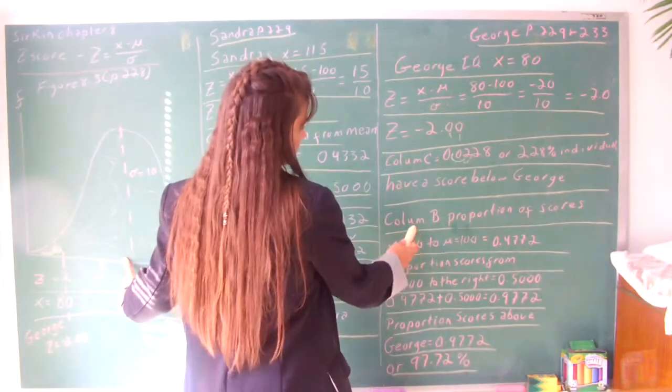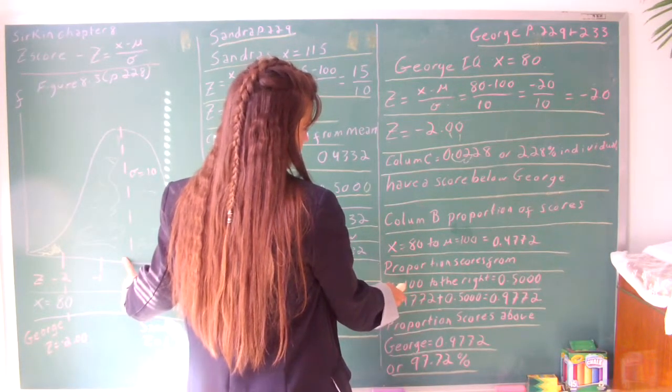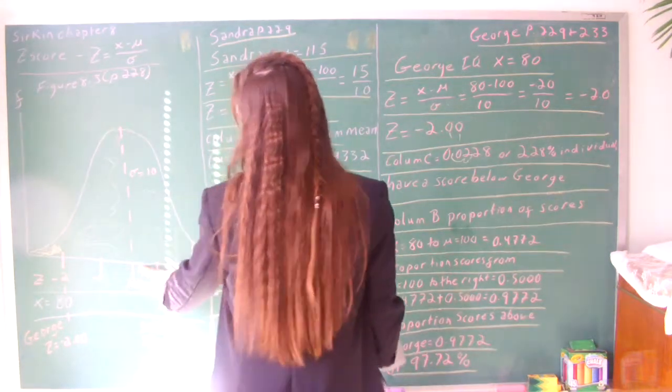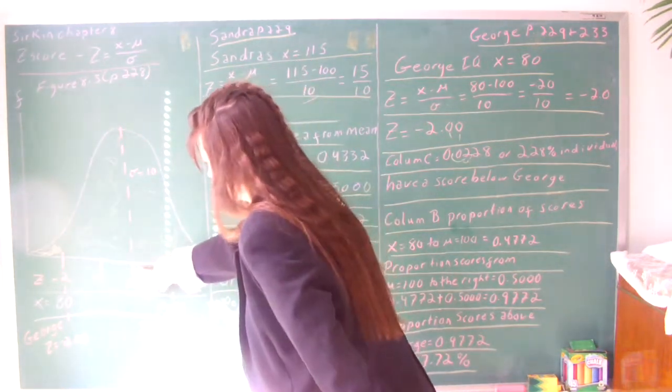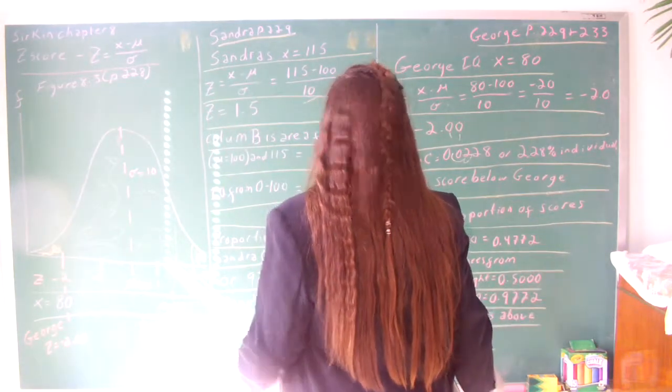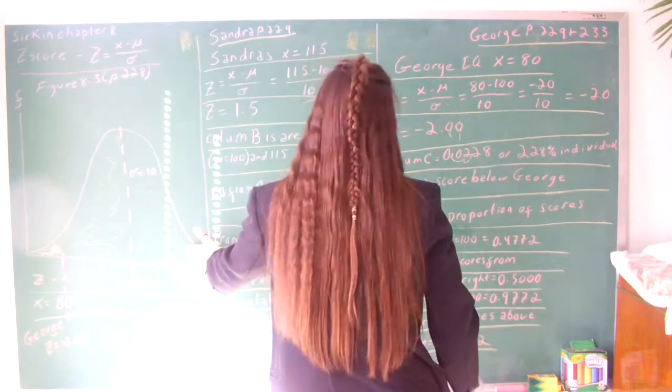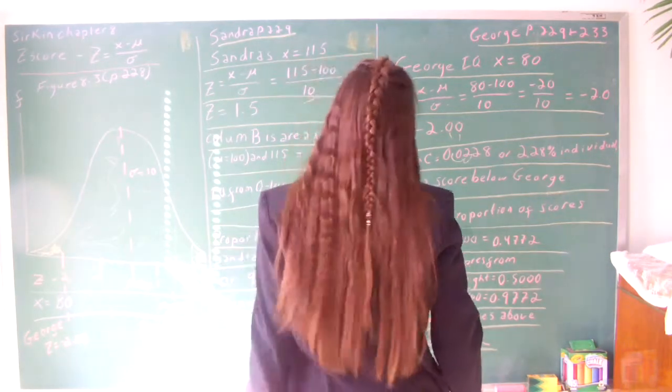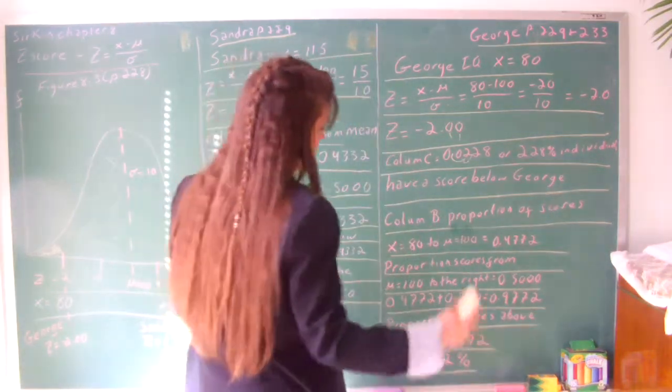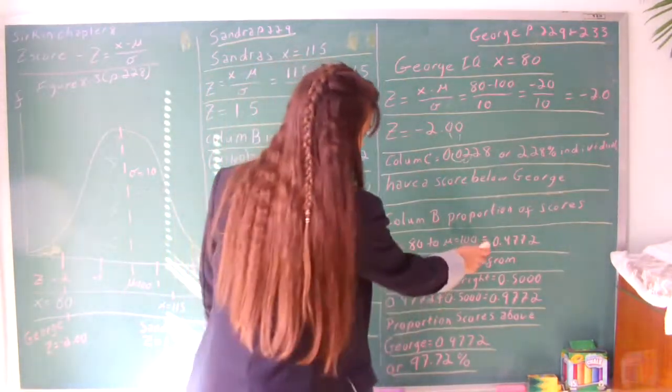The proportion of scores is column B. Then the proportion of scores for the next would be from 100, which is the population mean mu, to the end of the table, which would be 50% of the scores, or a proportion of 0.5000. To figure out how many individuals have a score above George's, you add these two together.